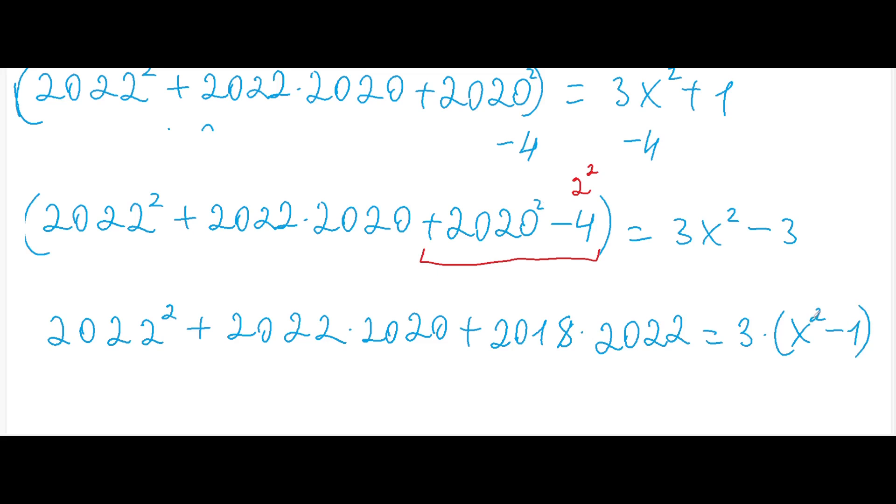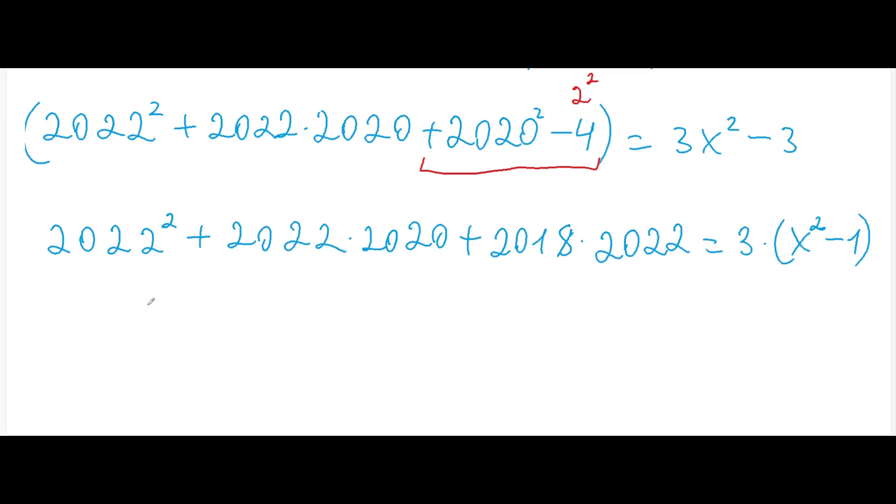We just took out 3 here from the brackets. And now we can see that 2022, and we now can take out from the brackets this 2022, and we will get 2022 plus 2020 times 2018. And this will equal to 3 times x squared minus 1.